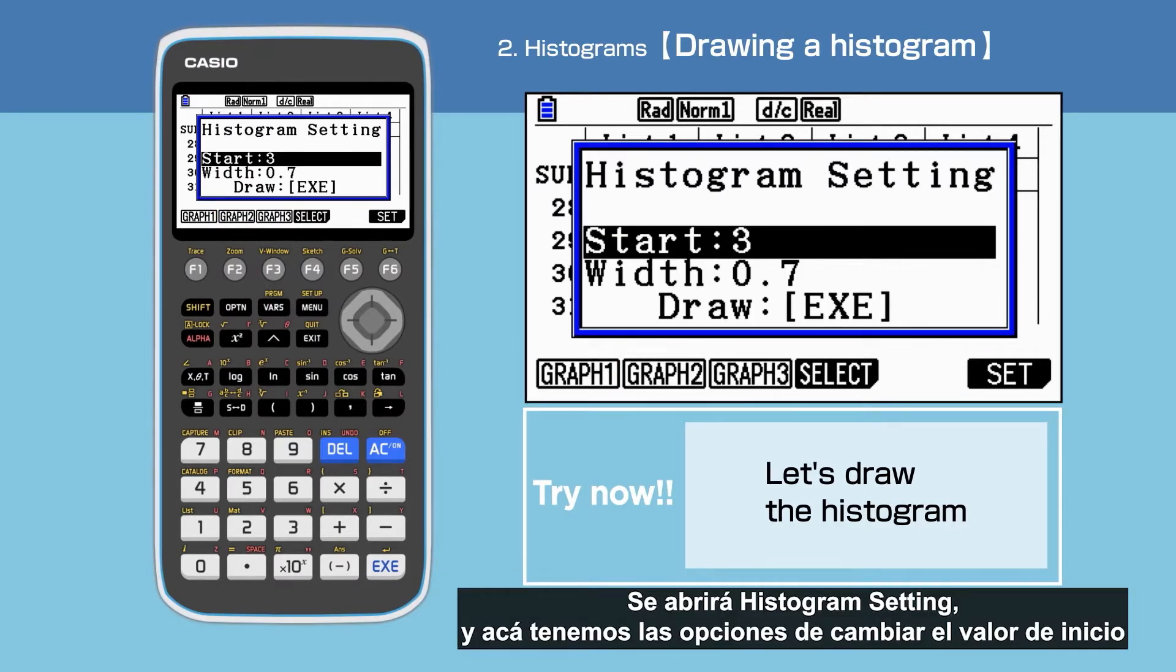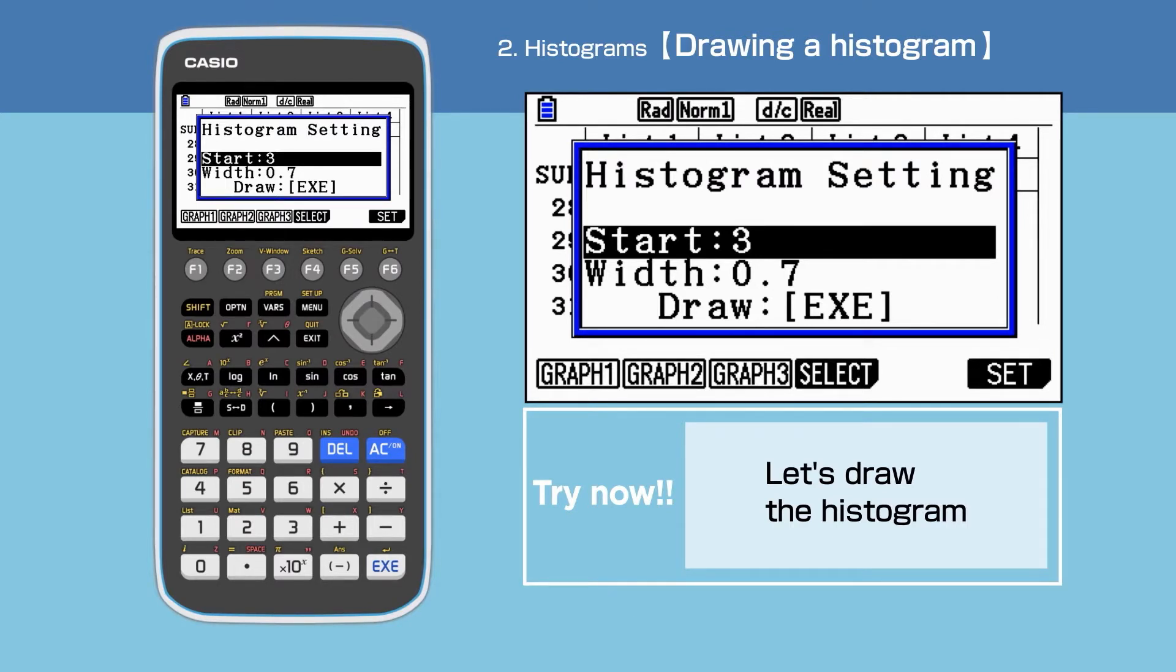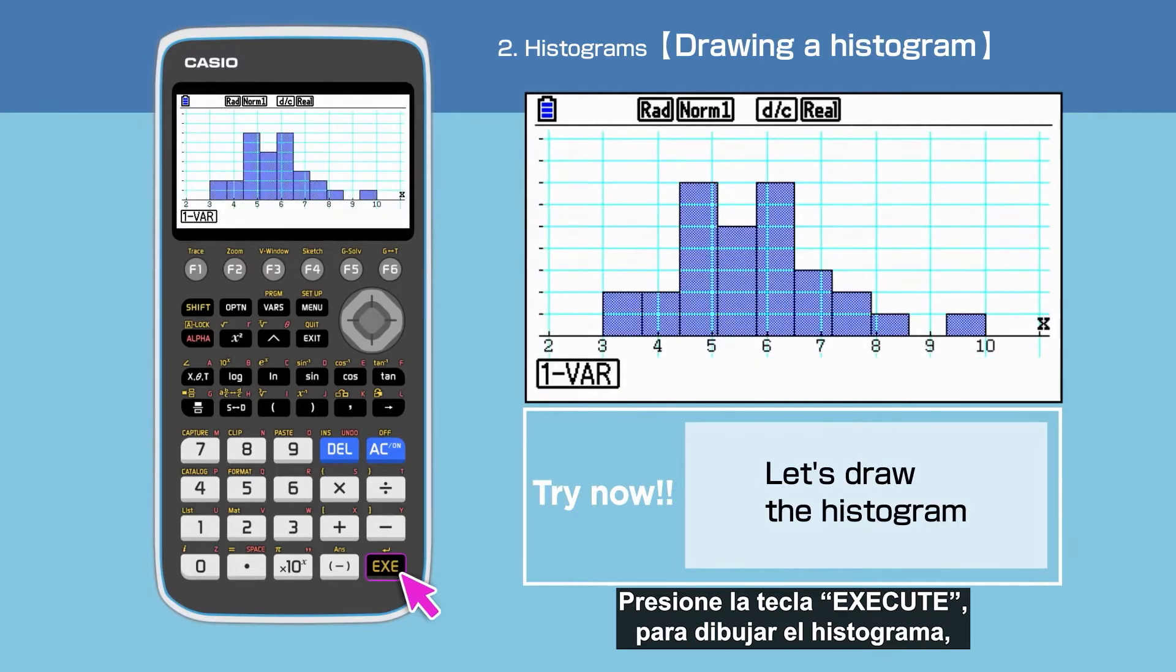The histogram setting is open and we have the option to change the starting value and the width of the histogram. Press Execute to draw.